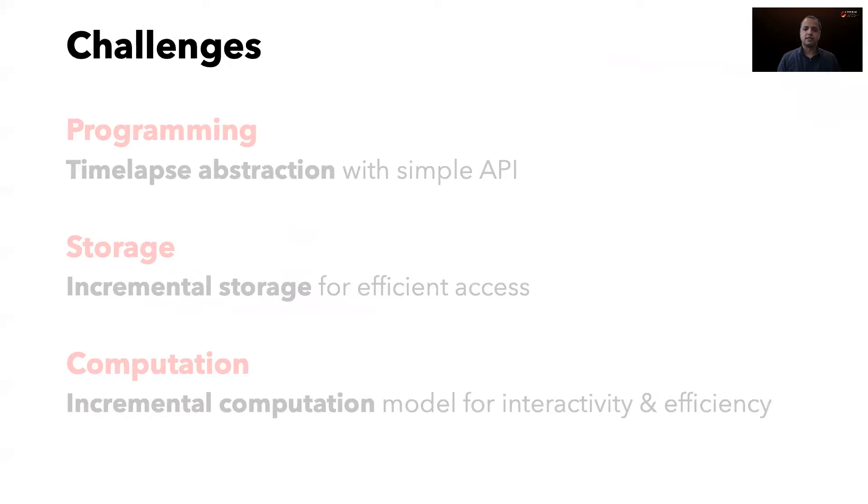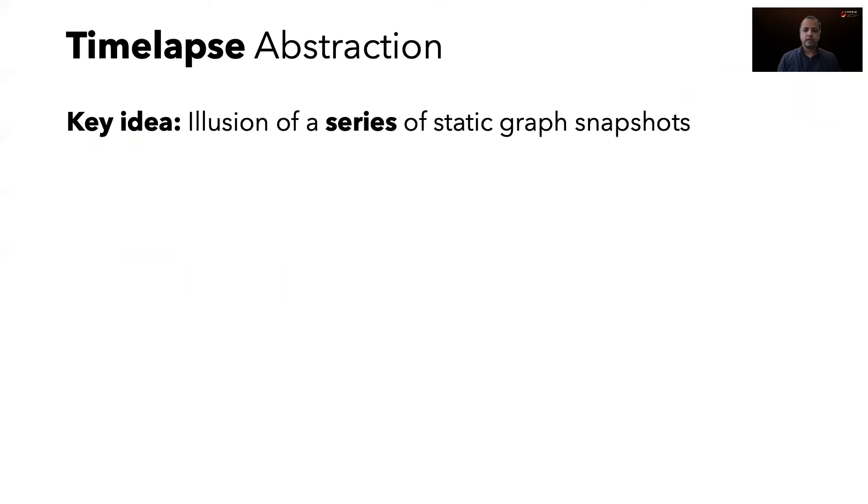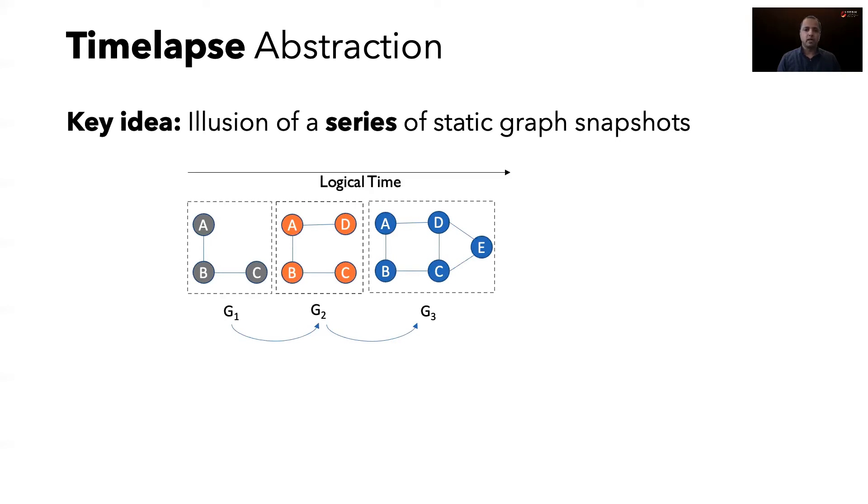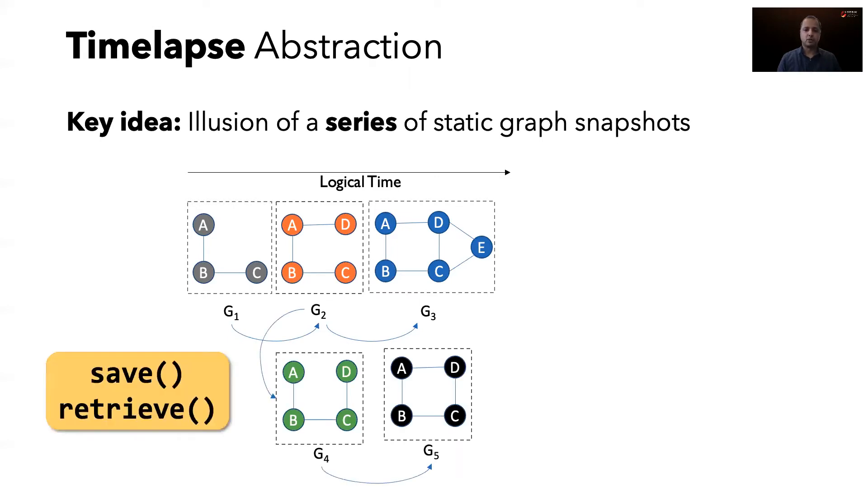Tegra solves the three challenges using simple solutions. For programming, we propose a natural abstraction called time-lapse for interacting with evolving graphs. In time-lapse, we represent evolving graphs as a series of static snapshots. For instance, in our example, G1 could be the state of the network at 9am, G2 at 10am, G3 at 11am, and so on, each of which can be seen as individual snapshots. Note that time-lapse represents logical time. A user can make modifications to the graph at any point during the analysis. Time-lapse is exposed as a simple API which extends the graph interface in existing graph systems. The save and the retrieve API can be used to store and get snapshots from the time-lapse.